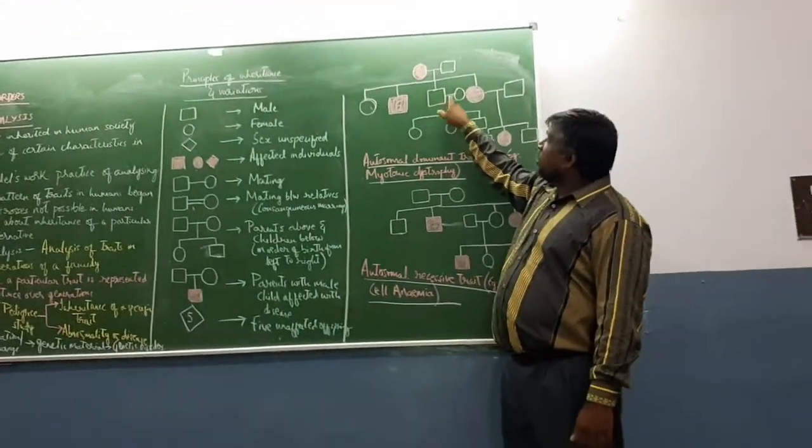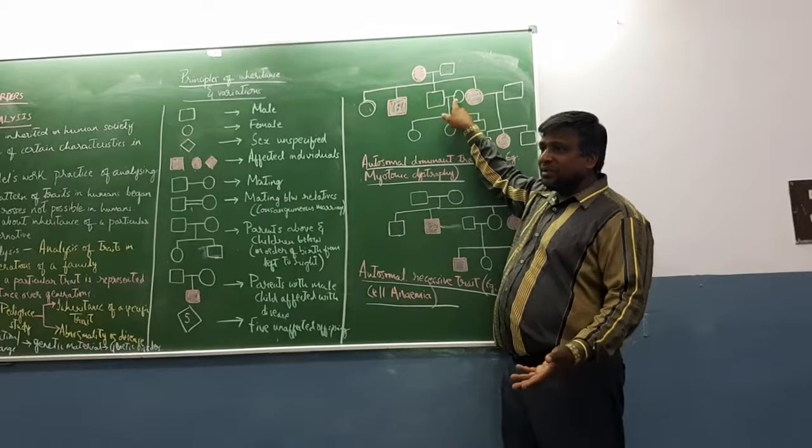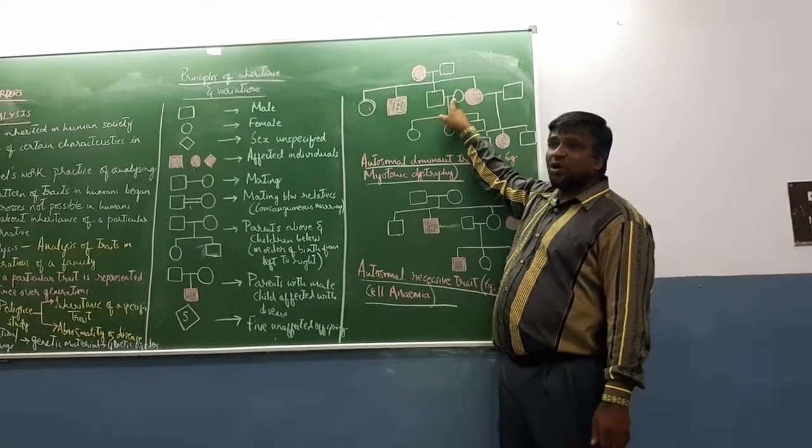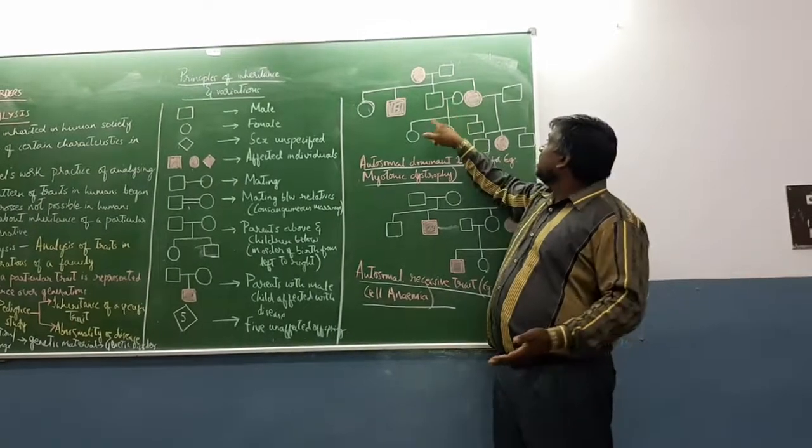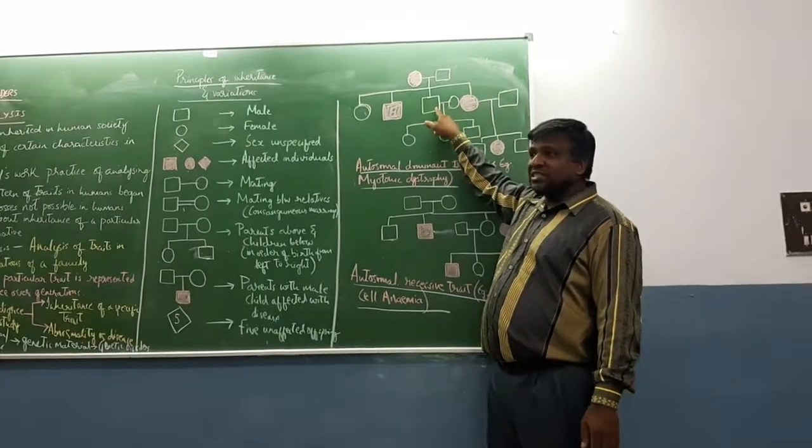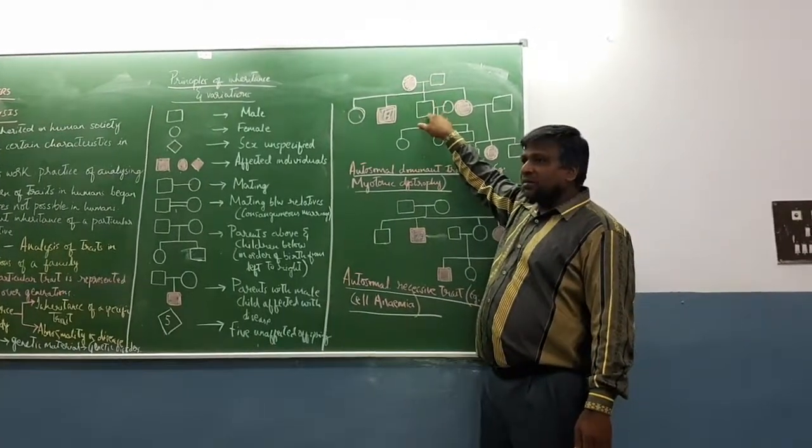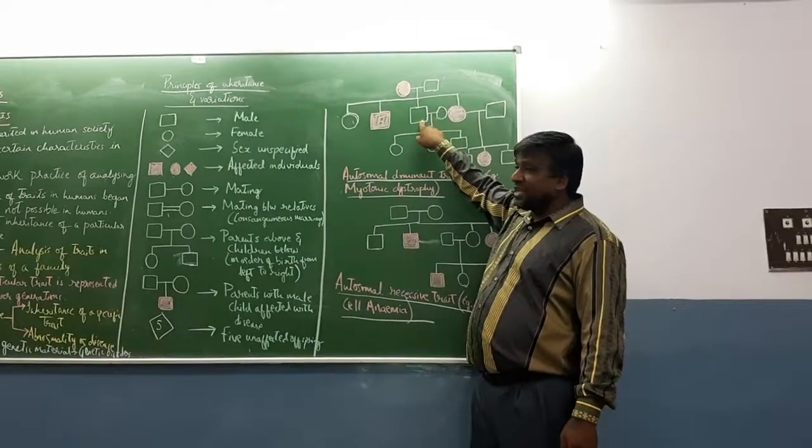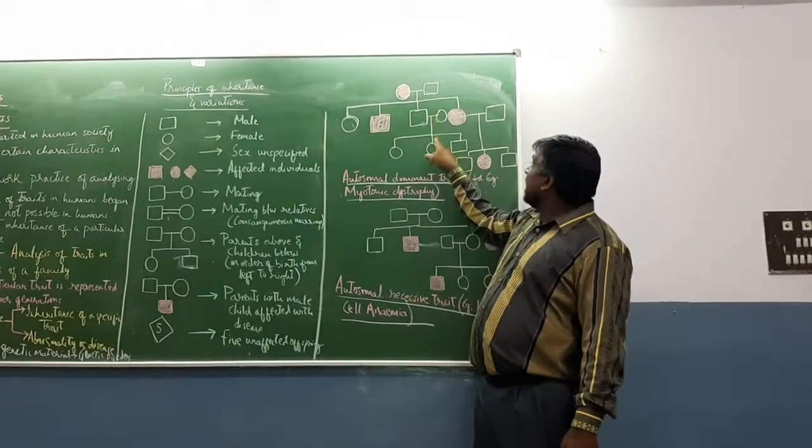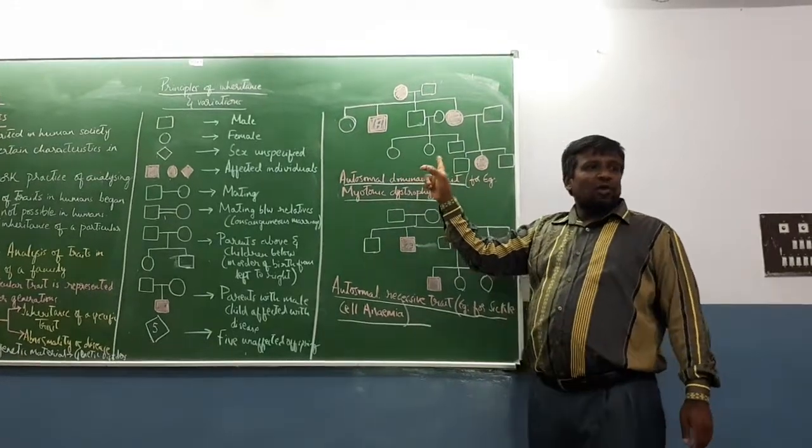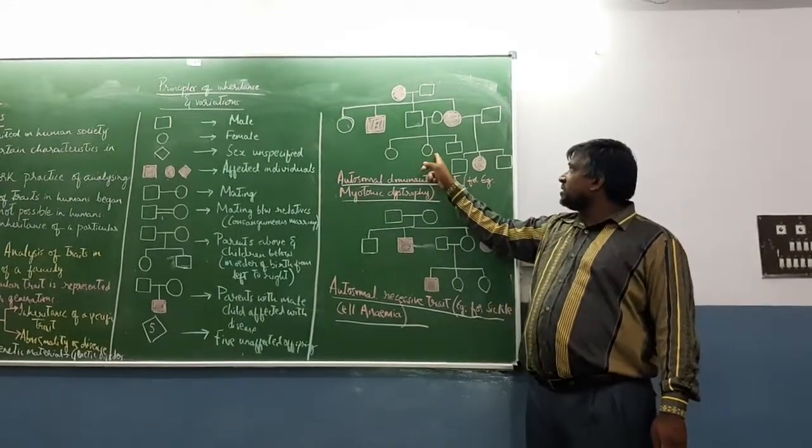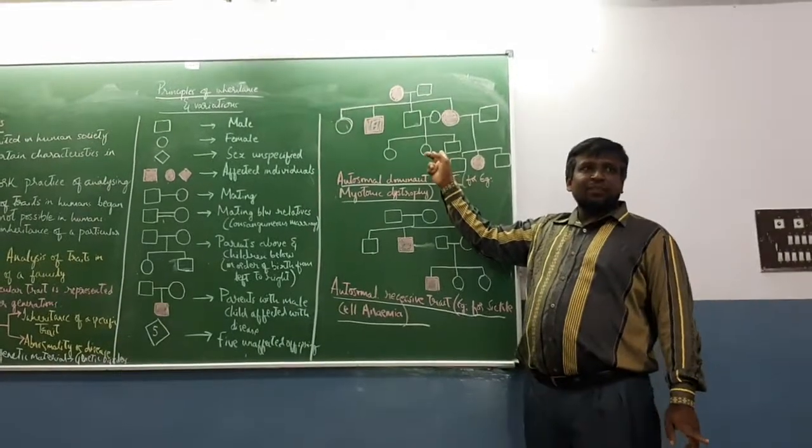The third son has got married. Both of them are normal. Son and parents here. Now they have become parents and given birth to three offspring. All three offspring are normal - two normal daughters and one normal son.